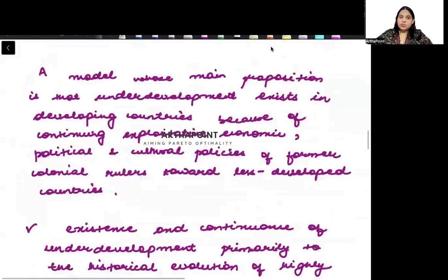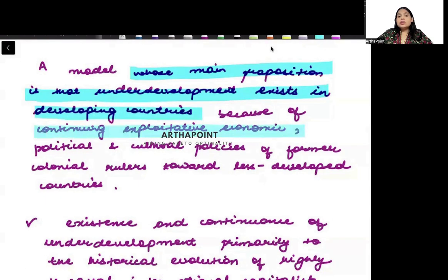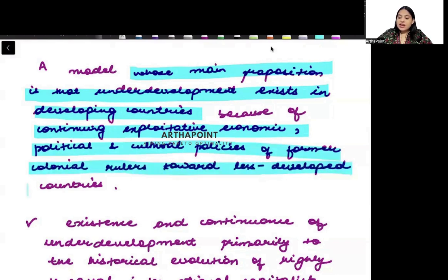A model whose main proposition is that underdevelopment exists in developing countries because of continuing exploitative economic, political, and cultural policies of former colonial rulers towards less developed countries. They are exploiting the underdeveloped countries in every way.